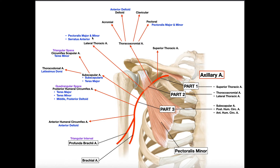Those are the two branches from part two of the axillary artery: thoracoacromial and lateral thoracic. Then we have part three, which begins once the axillary artery emerges from underneath pectoralis minor. Part three has three branches: subscapular, posterior humeral circumflex, and anterior humeral circumflex.